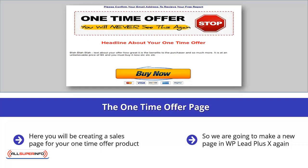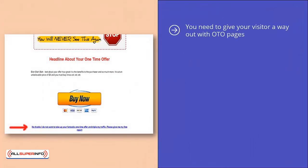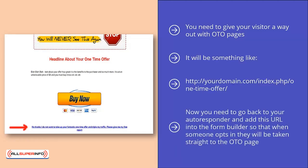At the bottom of the OTO page, we have added some text. You need to give your visitor a way out with OTO pages. This page will be a link to your email confirmation page, which we will cover shortly. Once your OTO page is finished, then grab the URL by clicking on View Page. You will need this to add to your autoresponder form. Now you need to go back to your autoresponder and add this URL into the form builder so that when someone opts in, they will be taken straight to the OTO page. Once you have done this, get the HTML code for your opt-in form and copy it.